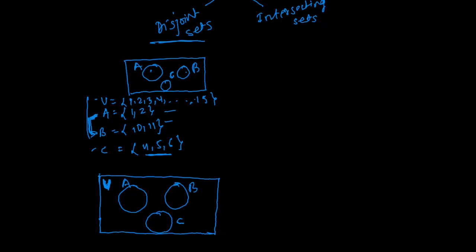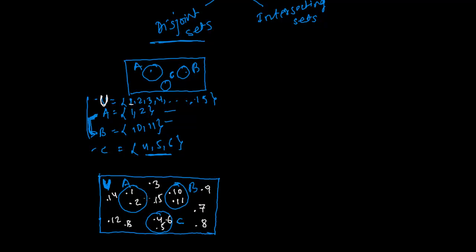Now I will fill in all the elements of A, B, C, and then U. In A there is 1 and 2. In B we have 10 and 11. In C we have 4, 5, and 6. For the rest of the universal set — which goes from 1 to 15 — we already have 1, 2; so we write 3 in the outer region, then 7, 8, 9. We have 10 and 11 already inside B, so then we write 12, 13, 14, and 15 in the outer region of U. This is how you represent a disjoint set in the Venn diagram.